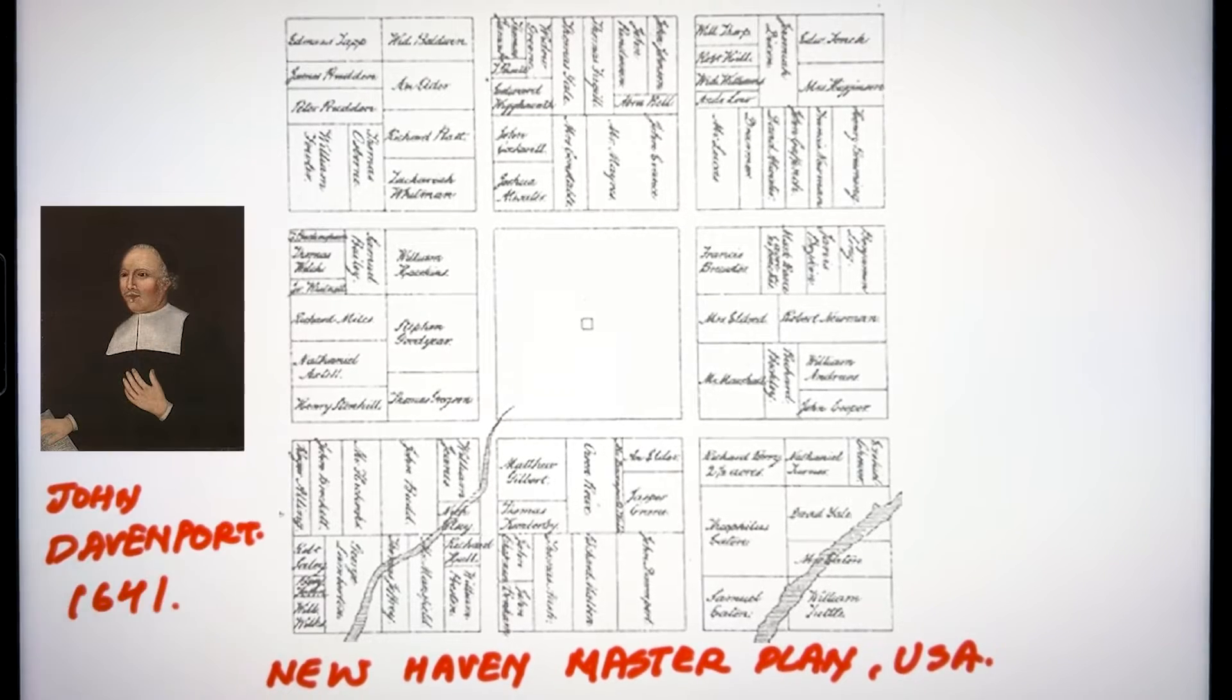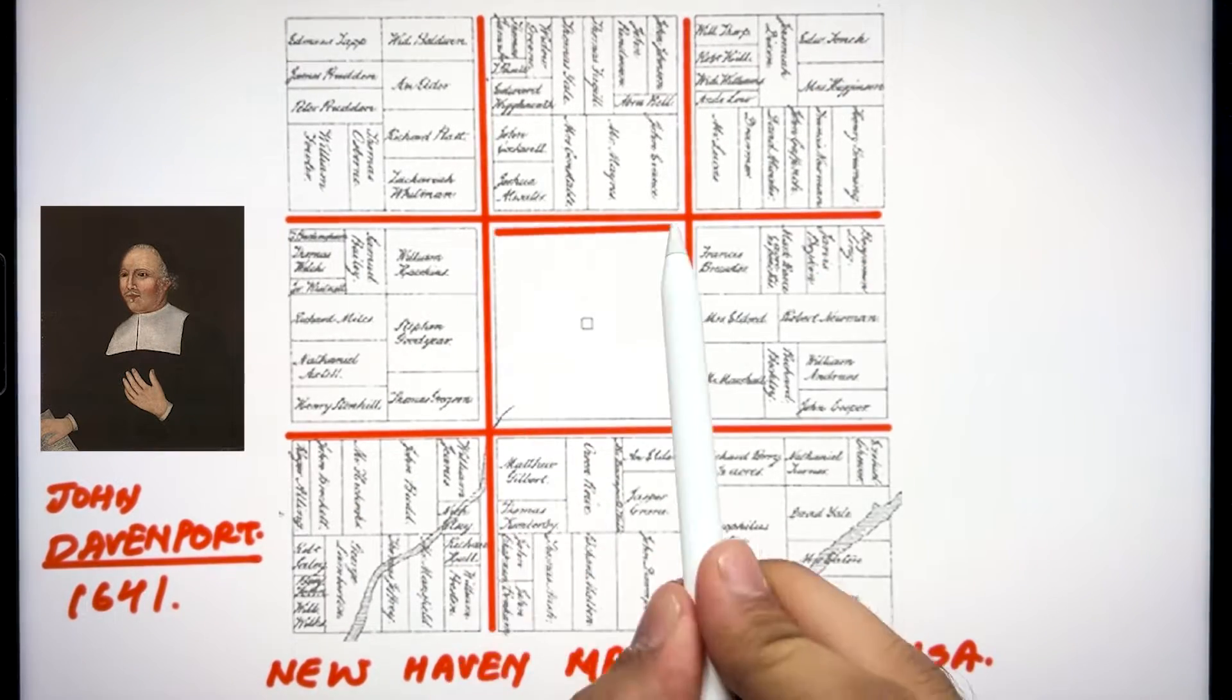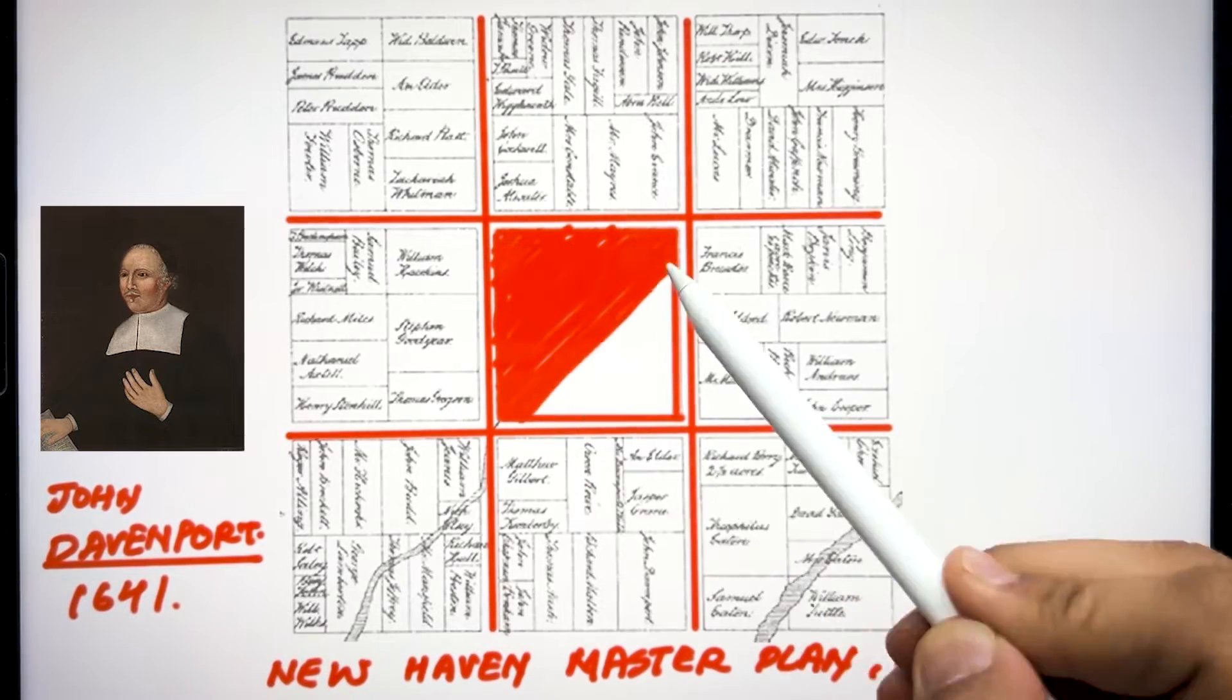In 1964, John Davenport designed a new master plan for the USA, which also followed the system of nine grid with proper access following the order.